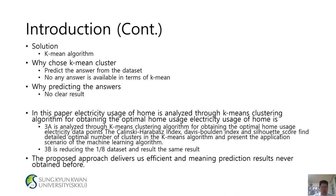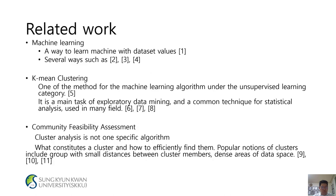Data points are evaluated using the Calinski-Harabasz index and the Silhouette score to find the detailed optimal number of clusters in the K-means algorithm. The application scenario of the machine learning algorithm on the 8-per-1 dataset yields consistent results. The proposed approach delivers efficient and meaningful prediction results never obtained before.